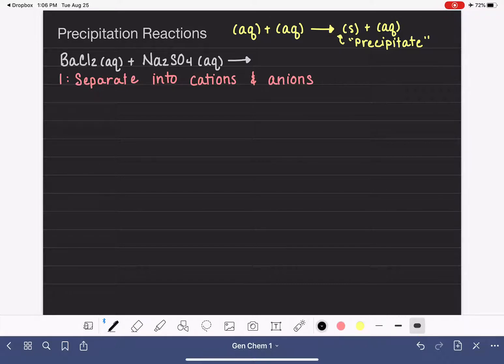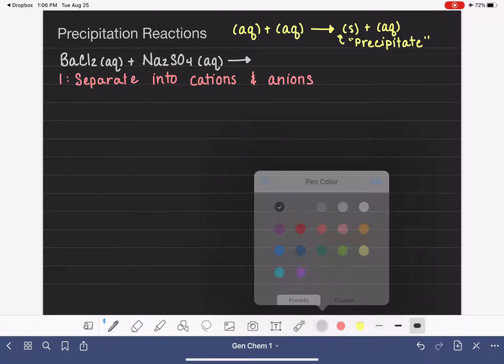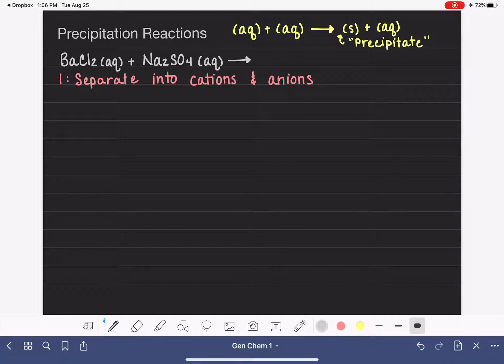So like I said, the first task is to separate these compounds into cations and anions. Remember that in the formulas, the cations are always written first. So for BaCl2, the cation is the barium ion. And if I were to flip back to the periodic table, I would see that that barium ion has a 2+ charge. And that barium ion is still in the aqueous state because it's still dissolved in water. Our anion, which is second, is the chloride ion.